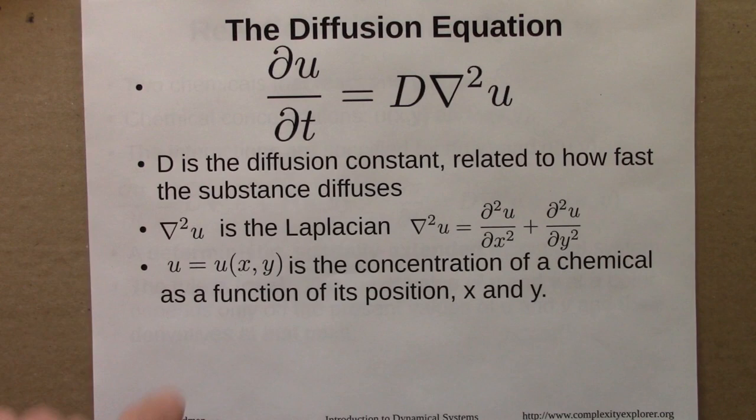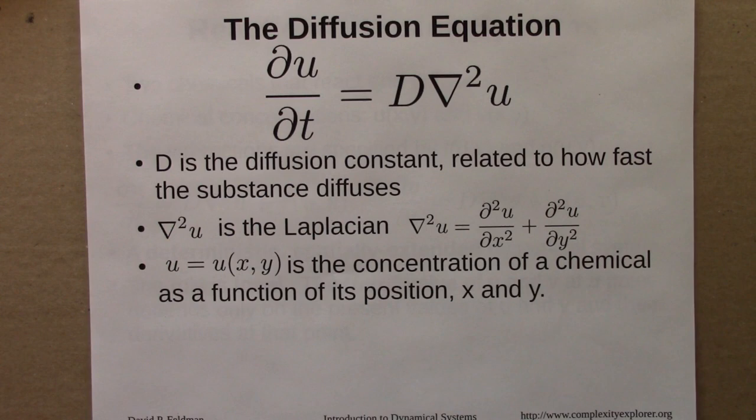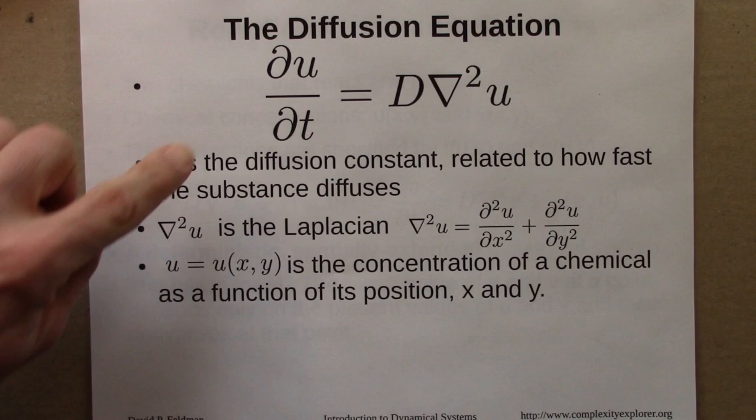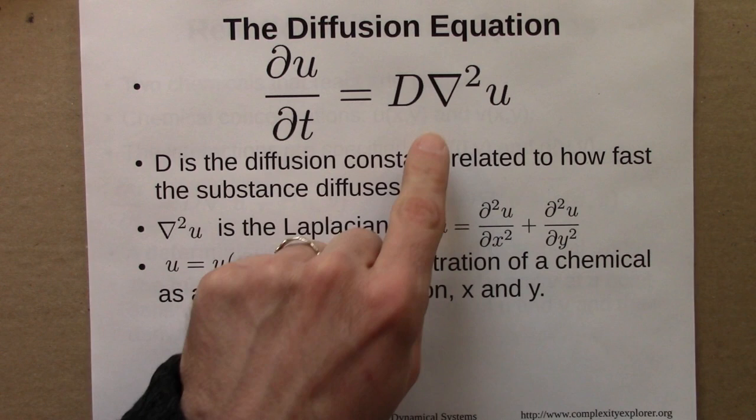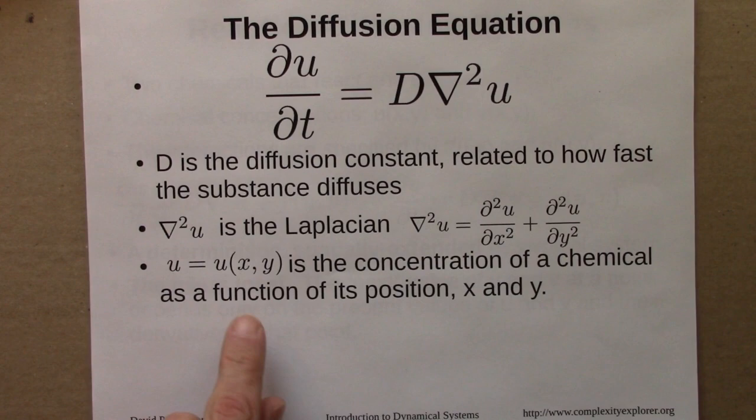Diffusion is described mathematically by the diffusion equation. In this equation, D is the diffusion constant — it's related to how fast the substance diffuses. Different substances will diffuse at different rates in different media, and this is often something one could measure experimentally. The left side is the rate of change of concentration, and on the right is the Laplacian, a certain type of spatial derivative of the system. U here is the concentration of a chemical and it's a function of X and Y.